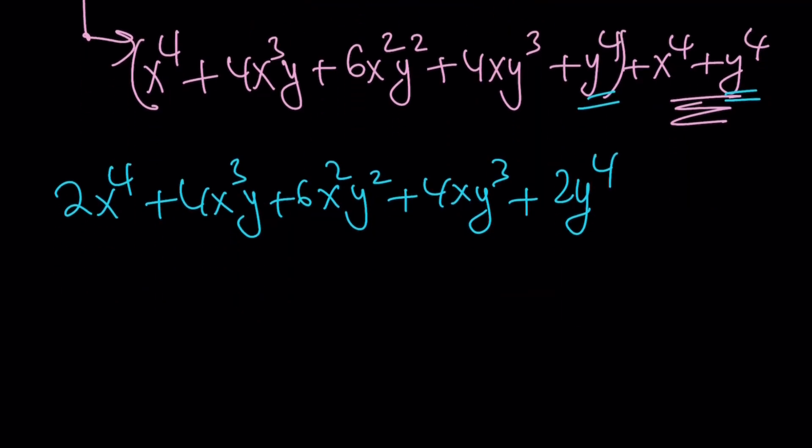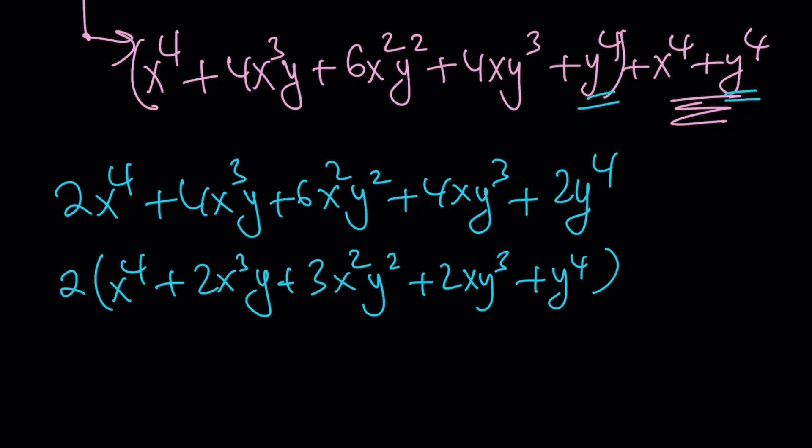So I can take out 2, just 2. That's it. And then that gives me x to the 4th plus 2x cubed y, plus x squared y squared - I mean 3. Half of 6 is 3, right? Plus 2xy cubed, plus y to the 4th power. Awesome. But not so awesome because we still have the denominator.